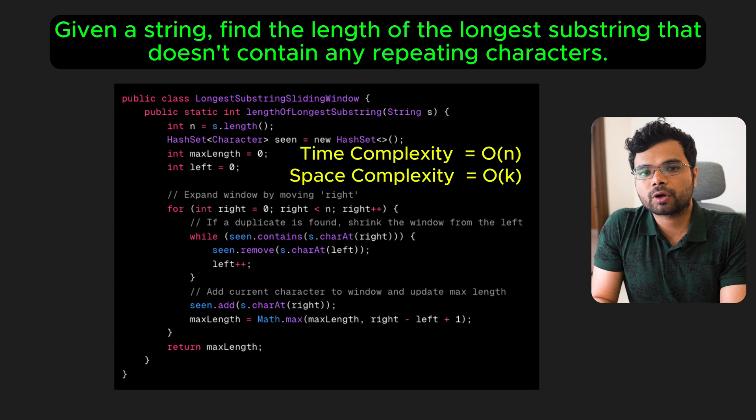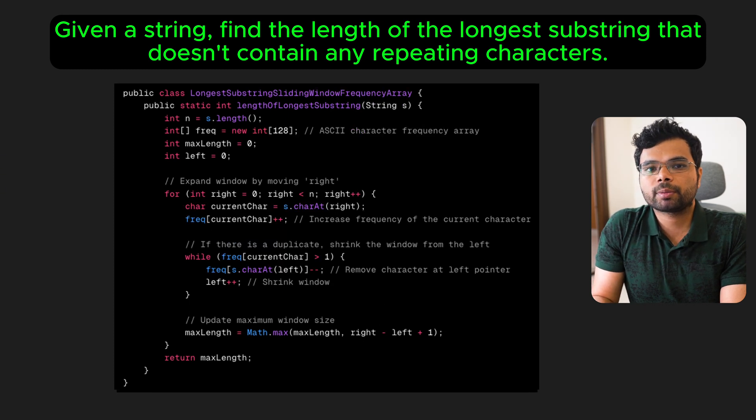If the character set is small, for example, all lowercase English letters, you can optimize this further by using a frequency array instead of a hash set. This can make the implementation slightly faster and more memory efficient.